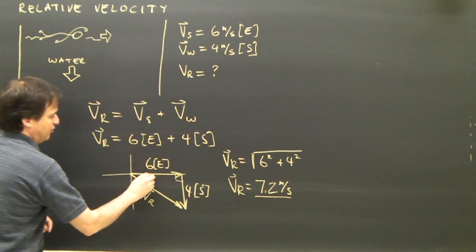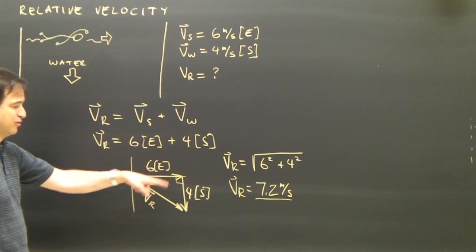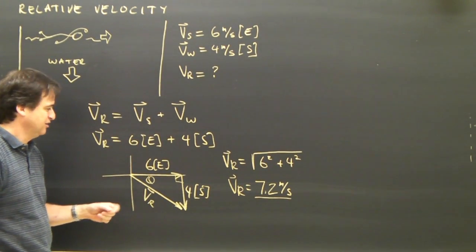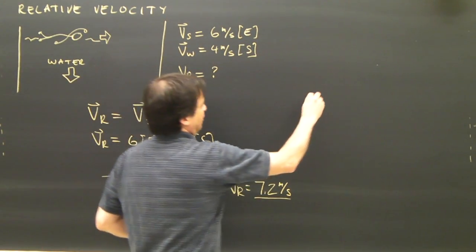Now what I want to do is I want to find this angle. Well, to find the angle, we're in a right triangle, which is quite easy. I have the opposite side and the adjacent side, so I'm going to use the inverse tangent.